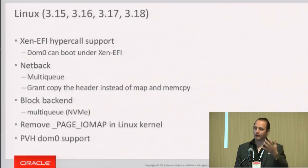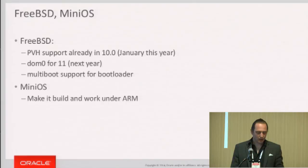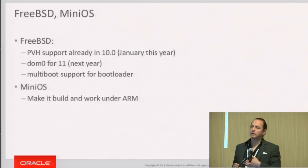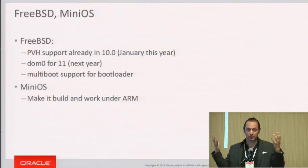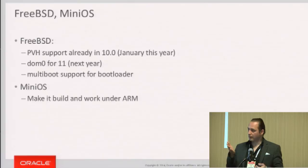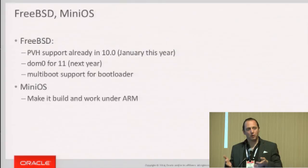I'll skip Linux details since David Vrabel will cover that. FreeBSD is also a Xen user and they're focusing on PVH. Their release cycle is about a year. They already have PVH DomU support and are going to expand to PVH Dom0 support, meaning you don't have to use Linux to boot a Xen host — you can also use FreeBSD. Years ago everyone said it has to be Linux, but now the upstream patches are in and you have choices. Also, work is being done to make MiniOS, the stub domain, work on ARM.